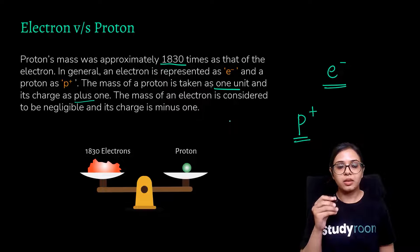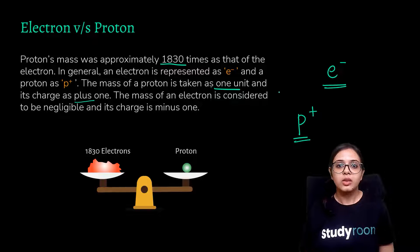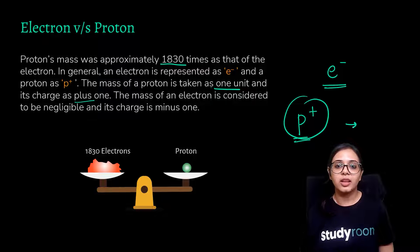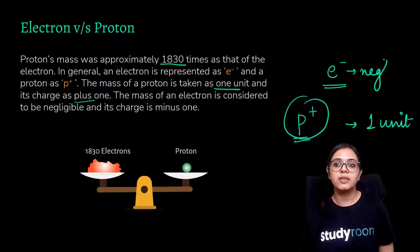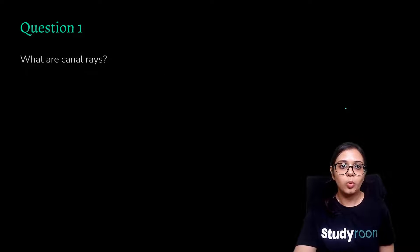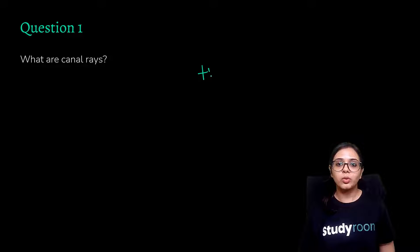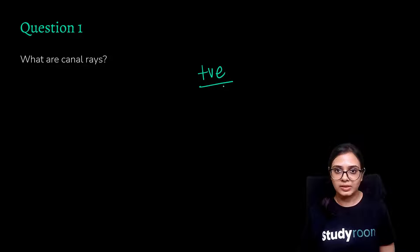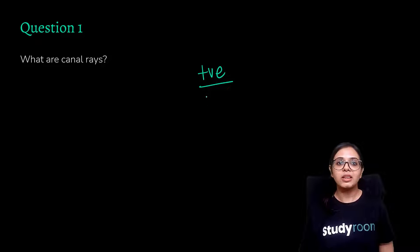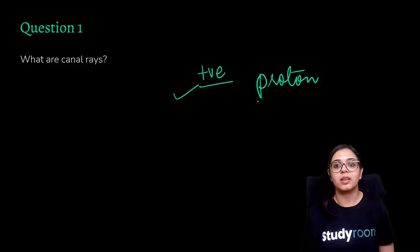The proton carries some mass while the electron's mass is almost negligible. The mass of one proton can be considered as one unit, whereas the electron's mass is very, very small compared to that of the proton. Canal rays are those positively charged ionized gaseous particles traveling from anode to cathode, discovered by Goldstein. Canal rays can be considered opposite to cathode rays because they are positive in charge — they are your protons — and they carry more mass than an electron.